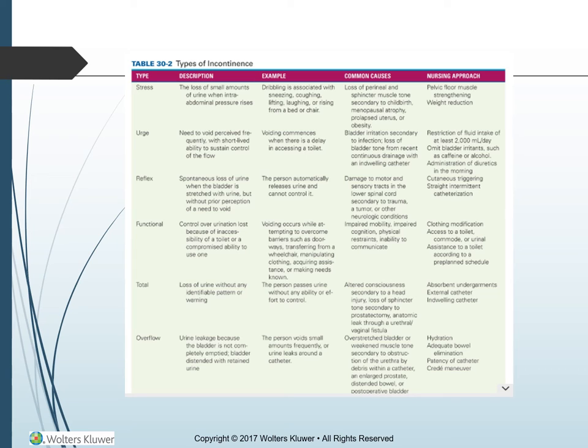Reflex incontinence is spontaneous loss of urine when the bladder is stretched without prior perception of the need to void. The person automatically releases urine and cannot control it. Cause: damage to motor and sensory tracts in the lower spinal cord, secondary to trauma, a tumor, or other neurological conditions. Nursing approach: cutaneous triggering and straight intermittent catheterization.